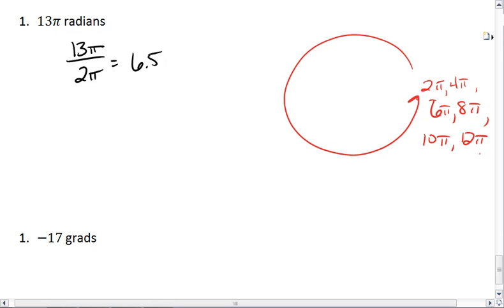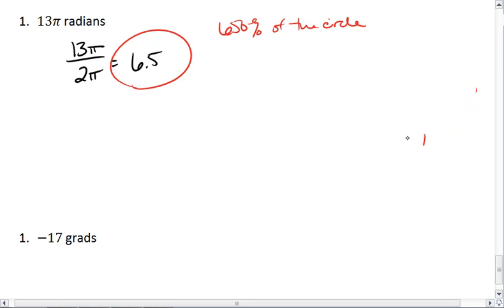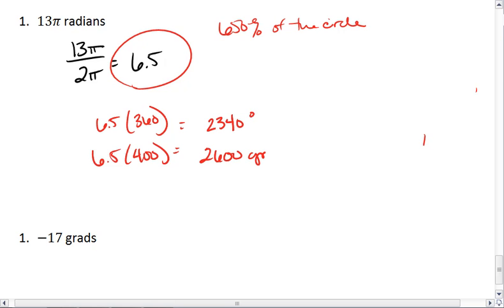13 pi brings me to the other side, which is 6.5 rotations. This means I have 650% of the circle. I take that number of rotations, multiply it by 360 to get degrees, multiply it by 400 to get grads. 6.5 times 360 gives me 2340 degrees, or 6.5 times 400 gives me 2600 grads.